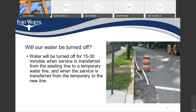Will our water be turned off? Water will be turned off for a 15 to 30 minute interval when service is transferred from the existing line to a temporary water line, and when the service is transferred from the temporary water line to the new water line. The temporary water line will be laid in the gutter with a line that ties in just past your meters — it takes about 15 minutes to make that connection, and that's the amount of time you'll be out of service.